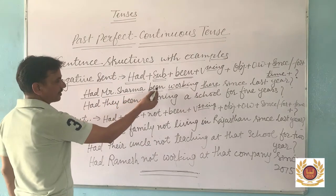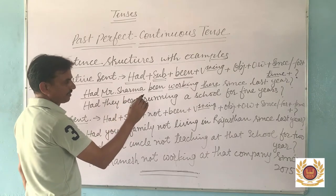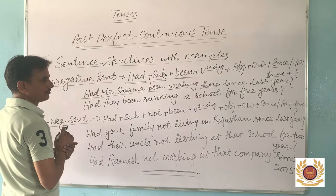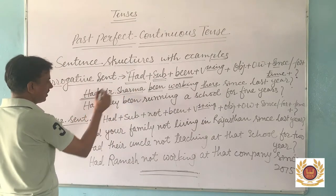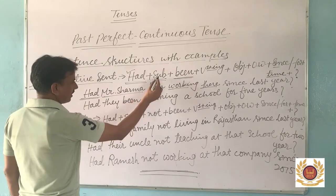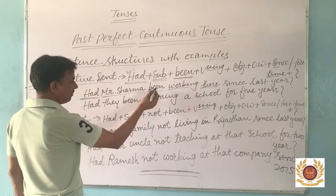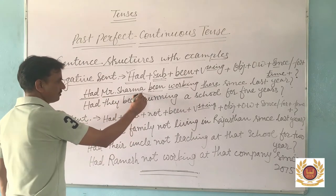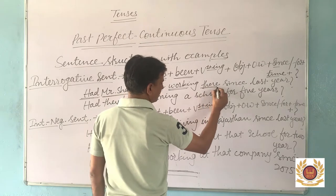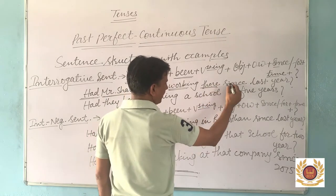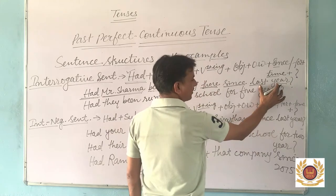Example: 'Had Mr. Sharma been working there since last year?' In this sentence, it is being asked whether Mr. Sharma was working there or not, with a particular point of time — last year. Following the structure: we start with helping verb 'had', then subject 'Mr. Sharma', then 'been'. Between 'had' and 'been' we have set the subject 'Mr. Sharma'. The first form of verb is 'work' with '-ing' as 'working', 'there' is another word, 'since' is the adverb because 'last year' is a point of time, and a question mark at last.